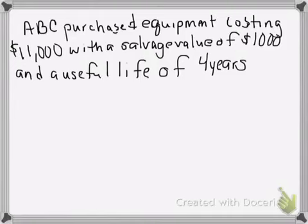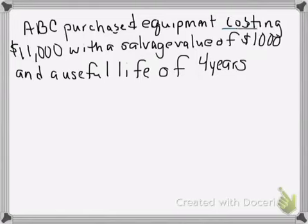The first one we look at, we are going to look at straight line as well as double declining balance. It says ABC purchased equipment costing $11,000 with a salvage value of $1,000 and a useful life of four years. We know that the cost is $11,000, salvage value is $1,000, and useful life is four years.